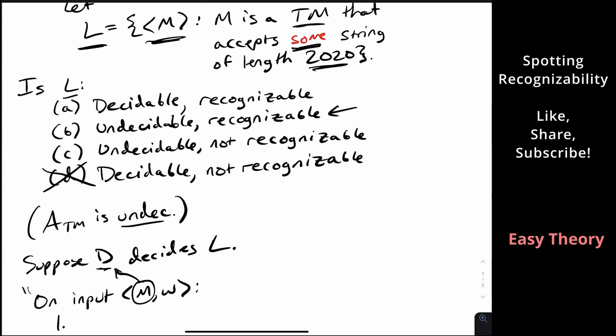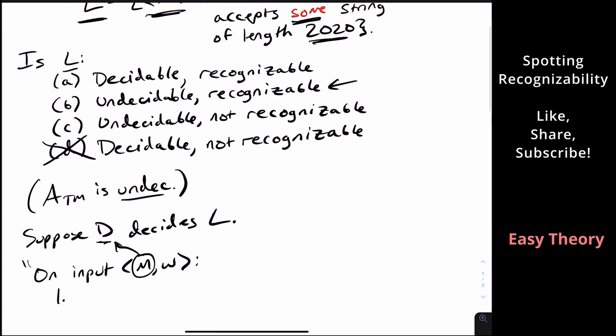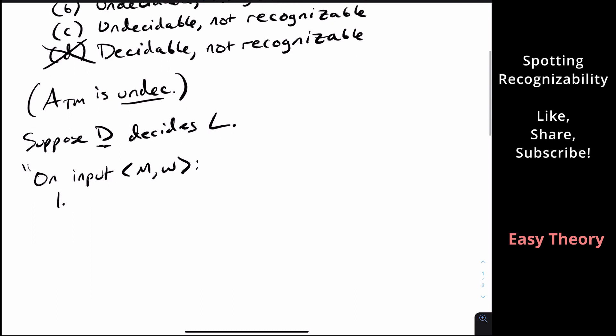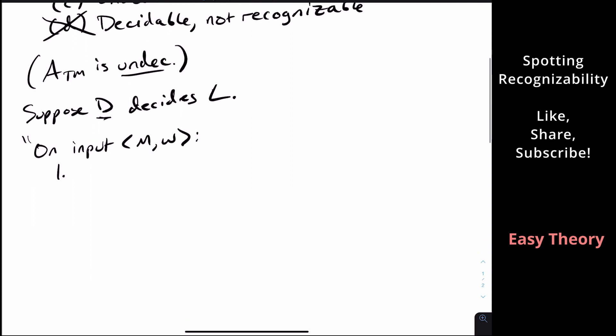Because if it tells us, well, it accepts some string of length 2020, well, that doesn't tell me anything about whether M accepts W. And if D says no, that it doesn't accept any string of length 2020, well, that still doesn't tell me anything about whether it accepts W.